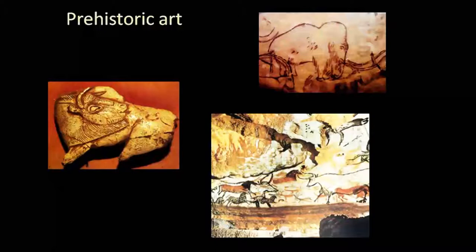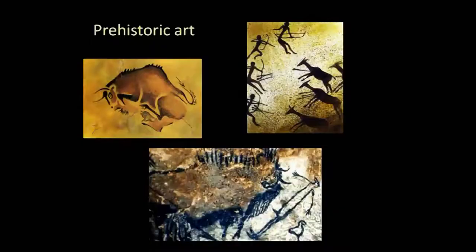Prehistoric art generally speaking involves not only paintings on the walls of caves but also small sculptures — mostly carved, perhaps stone carving or bone carving — and a few clay figures have also been found. So it was a kind of full-fledged art activity that was very much happening during that time.